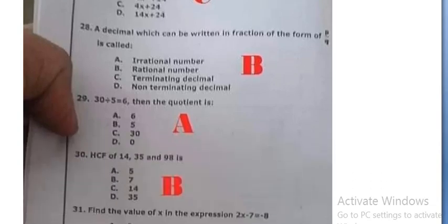A decimal which can be written in fraction form of p by q is called rational number, option B. 30 divided by 5 is equal to 6, then the quotient is 6, option A. HCF of 14, 35, and 98 is 7, option B.